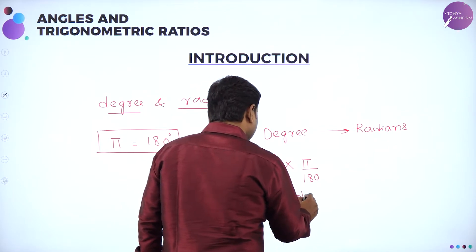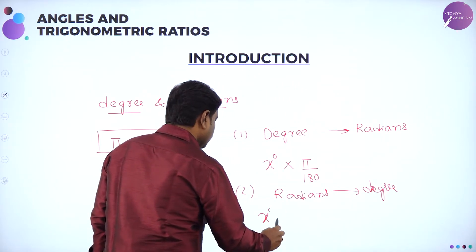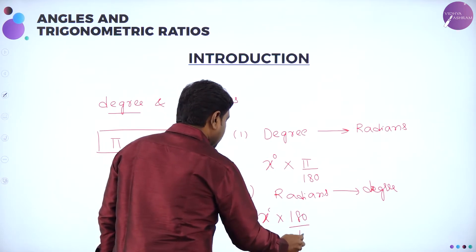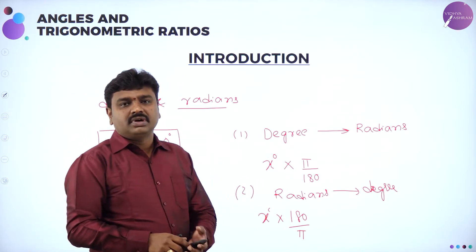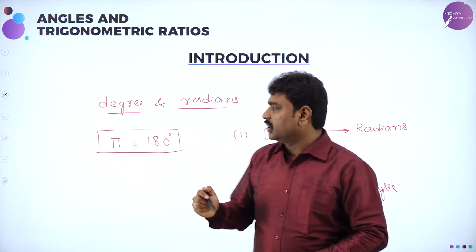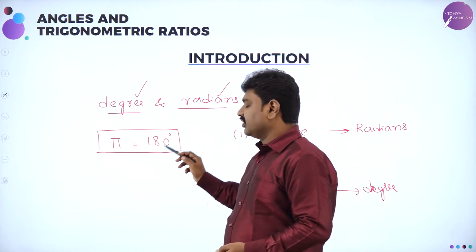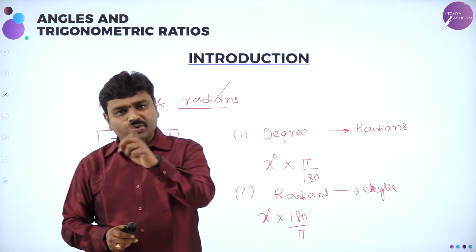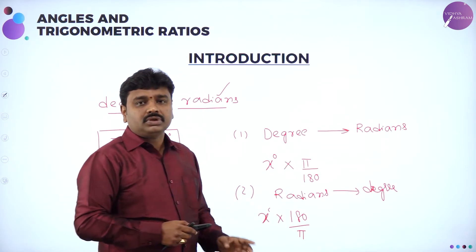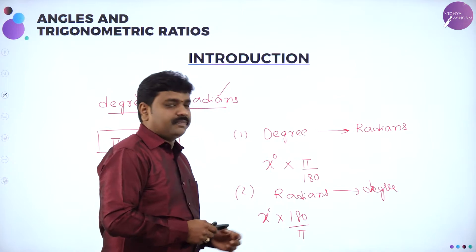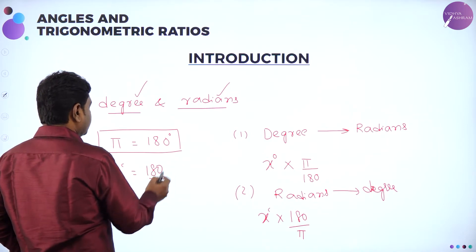To convert radian to degree: if they give x radians and you want to convert to degrees, multiply by 180 divided by pi. The basic relation is pi radians equals 180 degrees. So one radian equals 180 by pi degrees. That is how we convert. To summarize: degree to radian — multiply by pi/180; radian to degree — multiply by 180/pi.